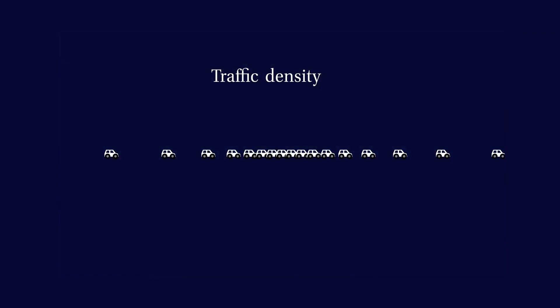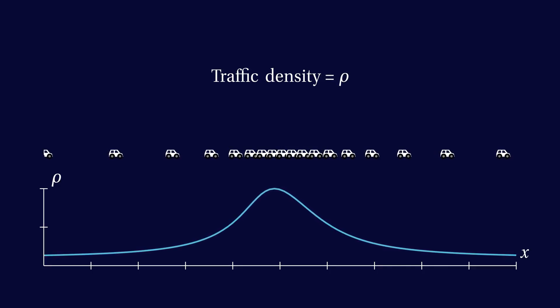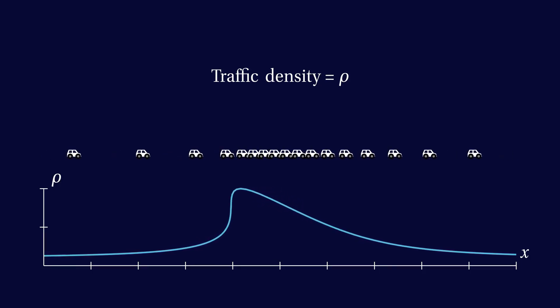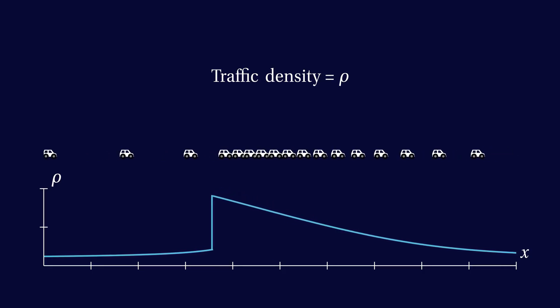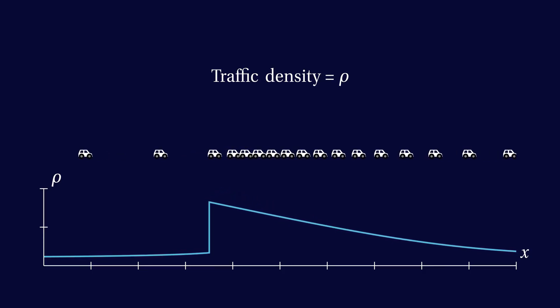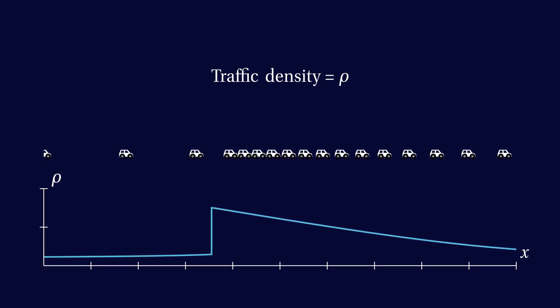So let's draw a plot of the traffic density, which we denote by the Greek letter rho. As the cars move along the road, the plot of the density will change shape. Can we predict how it will change over time without modelling the actual cars? Put differently, how do we model traffic if all we know is its density?